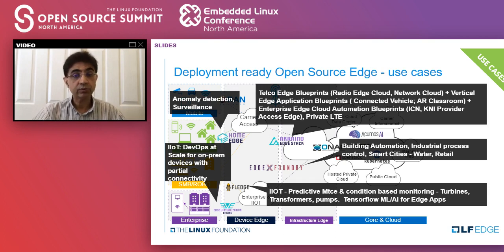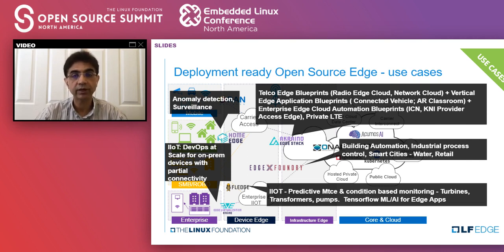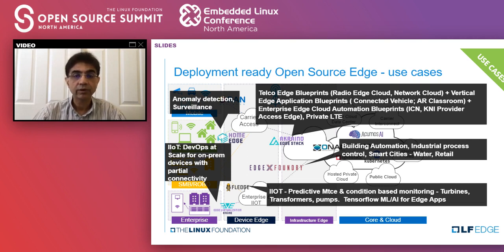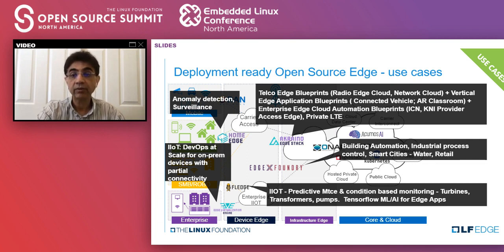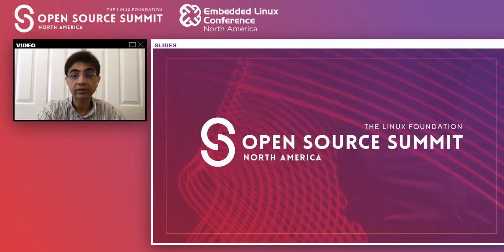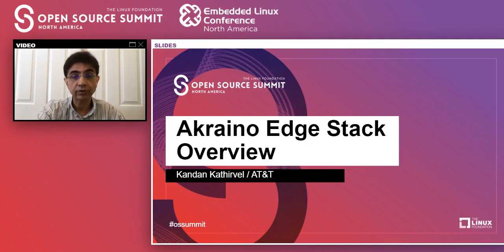The use cases we'll talk about today are all based on the projects we discuss — whether it's Home Edge for anomaly detection, DevOps at scale for EVE, Telco Blueprints, AR, VR, building automation, or predictive maintenance. All these are being discussed today. Ask as many questions as you want — we will be answering them towards the end of the mini-summit. With that introduction, I'm going to hand it over to our first presenter and the TSC Chair for the Acreno Edge Stack, Kandan. Take it away.